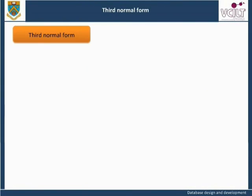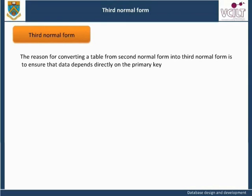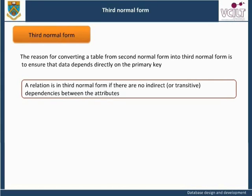Third Normal Form: The reason for converting a table from second normal form into third normal form is to ensure that data depends directly on the primary key and not through some other relationship with another attribute, known as an indirect or transitive dependency. A relation is in third normal form if there are no indirect or transitive dependencies between the attributes. All attributes must be directly dependent on the primary key. An indirect dependency is resolved by creating a new relation for each entity, containing the transitively dependent attributes together with the primary key.